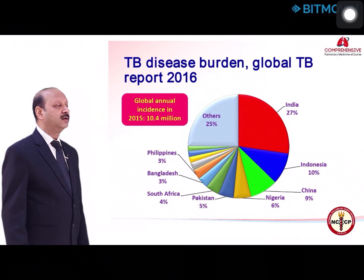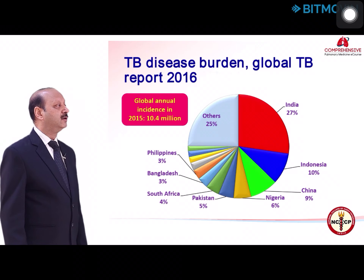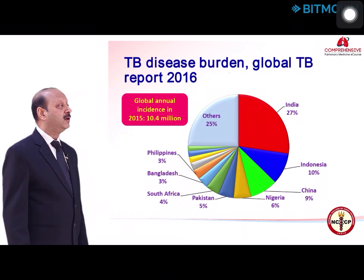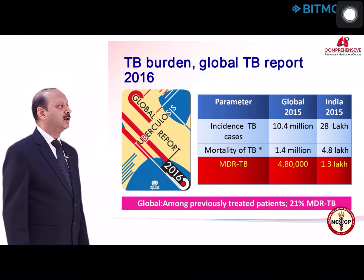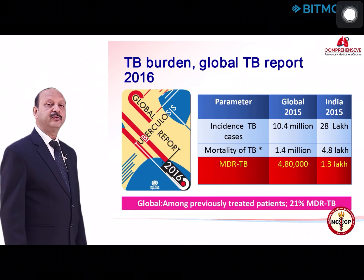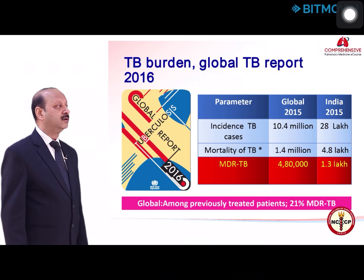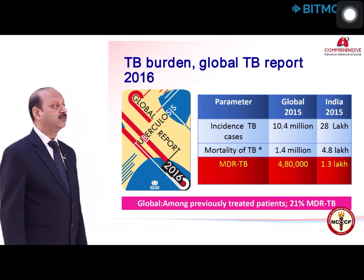Looking at the global annual incidence, the global annual report 2016 was recently released. It showed that in 2015 alone there were 10.4 million new cases of tuberculosis, and India contributed around 27% of them. Regarding MDR tuberculosis, they reported 4.8 lakh cases in 2015, and India had 1.3 lakh cases of MDR tuberculosis in 2015.